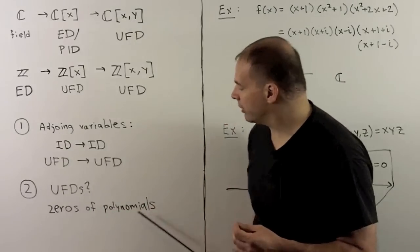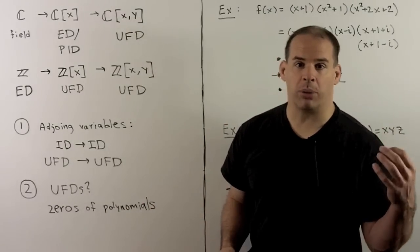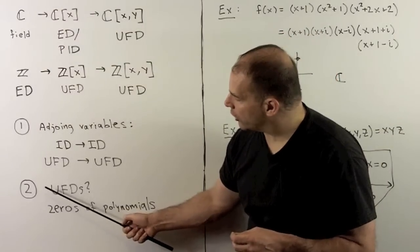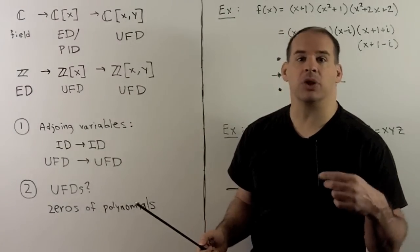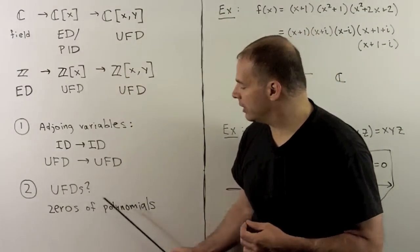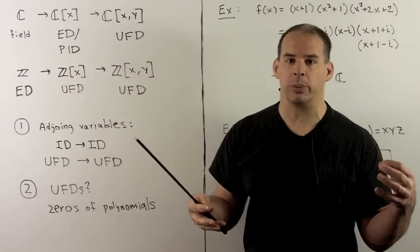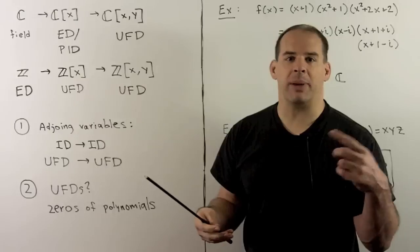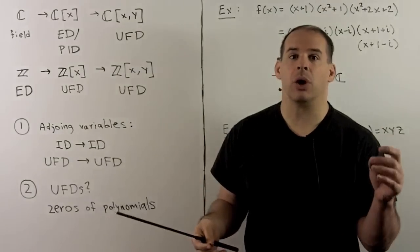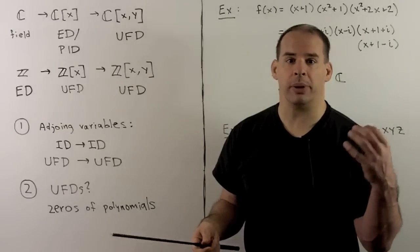For our second picture, we really haven't worked much with UFDs without stronger properties. So the prototype for a UFD that's not a PID is going to be one of these polynomial rings. Since we're in a UFD, if I have a polynomial I can factor into irreducibles, and one thing we've done back in basic algebra is take each irreducible factor, set it equal to zero, and solve — meaning we're going to draw a picture.